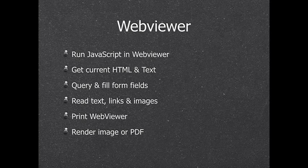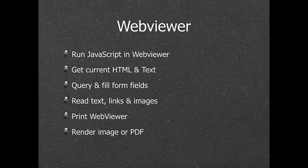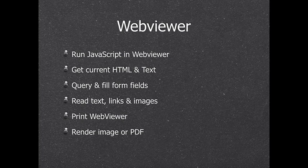You can query the current HTML and text from a web viewer — not just the HTML it loaded originally, but the live current HTML or text being shown. So you can extract whatever value is on the HTML. We can fill form fields, so if you go to the same website repeatedly and need to enter the same values — like a billing address — you can add a button to fill it automatically. We can read all the text on a page, read links or images, and download images. For example, one customer automatically looks up a client on LinkedIn and copies the contact information to his database.